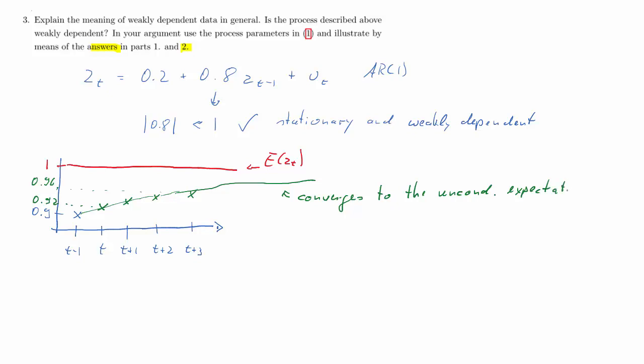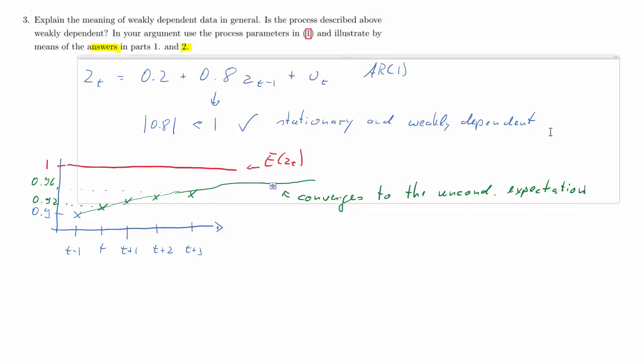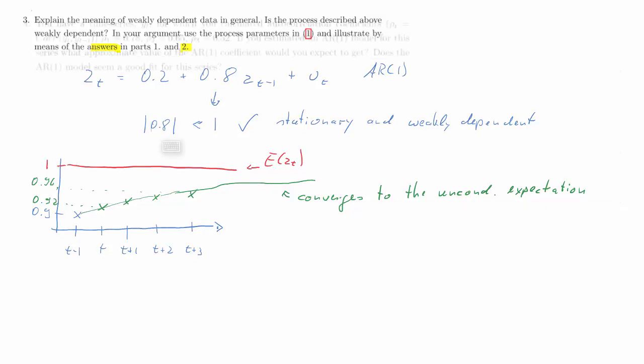Of course, what counts as 'quick' convergence is somewhat difficult to define precisely, and there is no hard boundary as a visual guide when looking at such graphs.